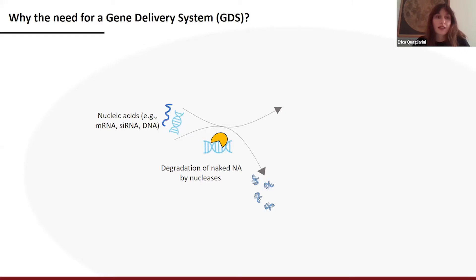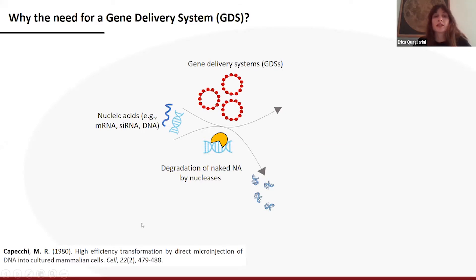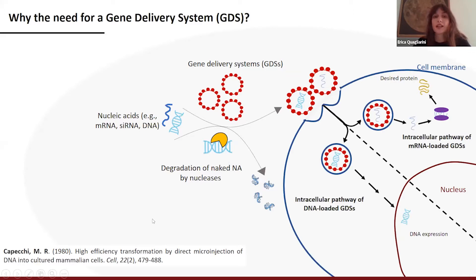Nevertheless, naked nucleic acids are highly susceptible to rapid degradation from the bloodstream and also clearance from the immune system. And moreover, even if directly injected in the cell cytoplasm, they do not work at all, as demonstrated in 1980 in the work of Mario Capecchi that was a Nobel Prize. Such limitation can be overcome by the use of gene delivery systems that can protect and prolong the circulation time of the nucleic acid. And after the interaction with the cell membrane, you can release the cargo in the cell machinery. So in the case of RNA, we must release the cargo in the cell cytoplasm. In the case of DNA, in the nucleus.